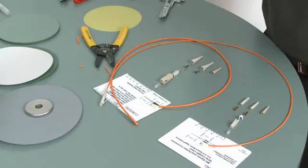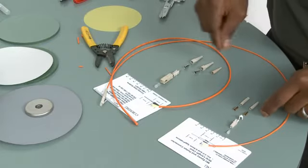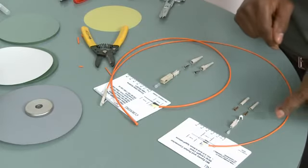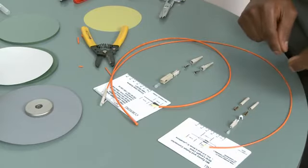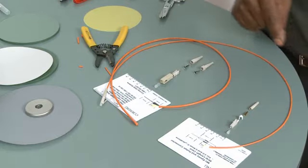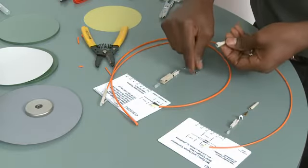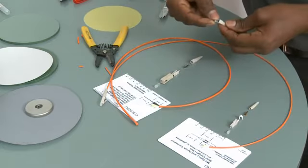I've arranged my connectors here to show how everything is going to work. This is the 900 micron boot. We're definitely not doing this, and since we're doing 1.6 millimeters on this, I'm not going to need the 2.9 millimeter boot.